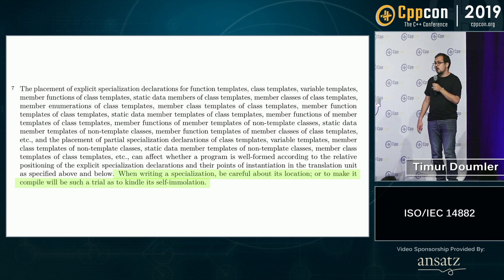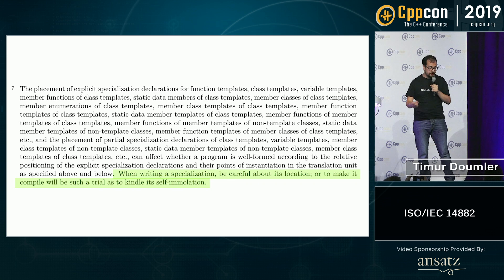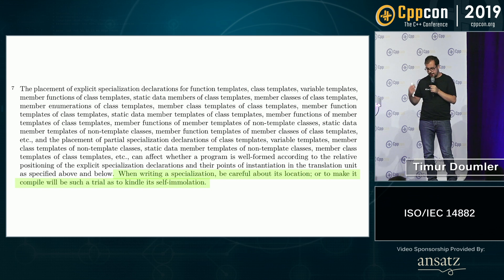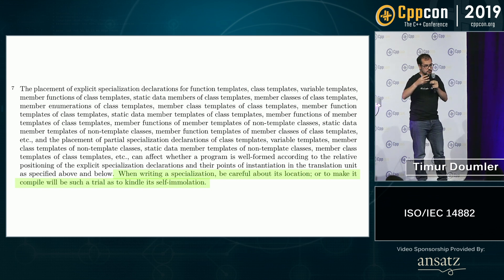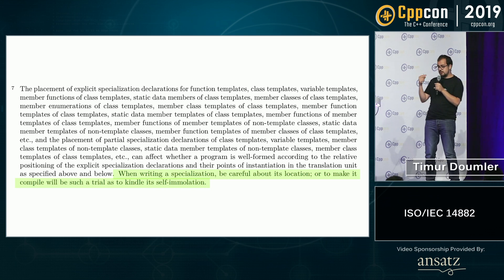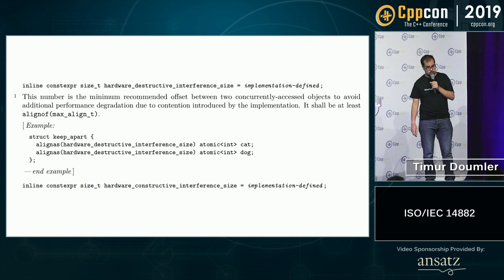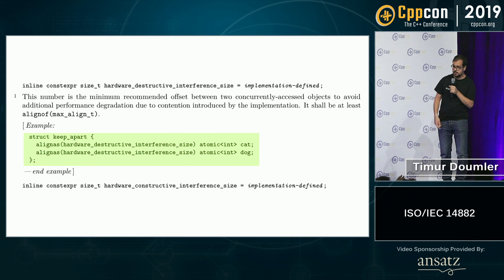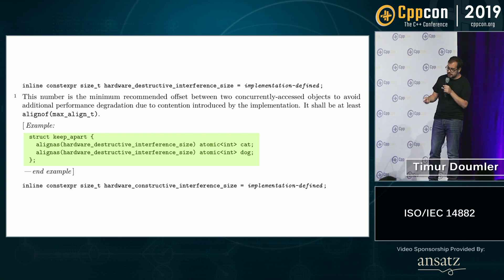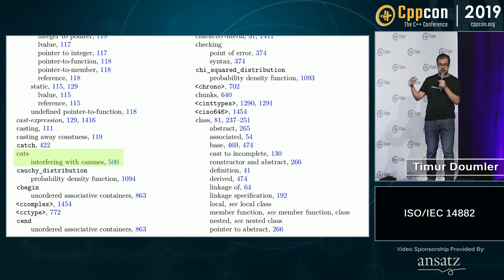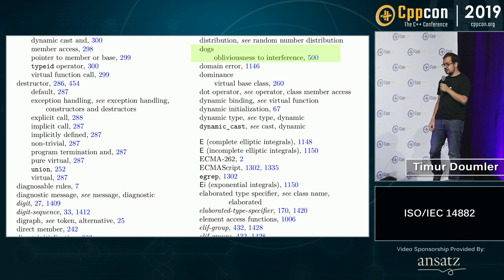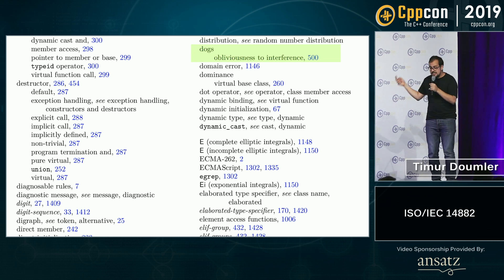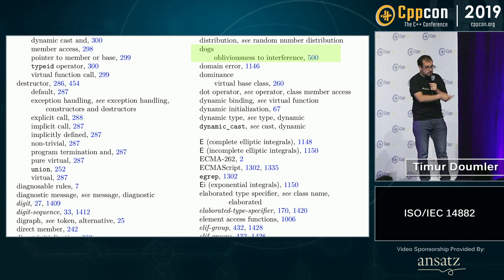Another time I was preparing a talk about atomics and performance, I was looking up the thing where if you have two atomic variables, you want them on different cache lines, otherwise you get false sharing. In C++17 we standardized the size of a cache line, called std::hardware_destructive_interference_size — quite a mouthful. In the standard I found an example with a cat and a dog: obviously you want to keep them apart, aligned on different cache sizes that don't interfere. But the annoying thing is they're indexed inconsistently — the cat is indexed as interfering with canines, but the dog is indexed as obliviousness to interference.